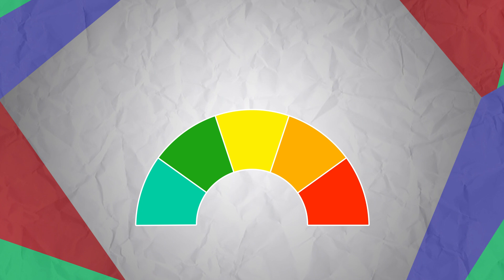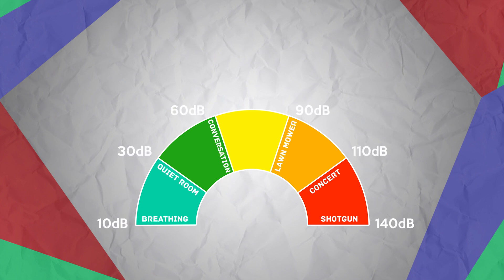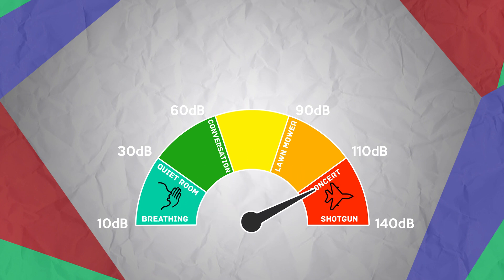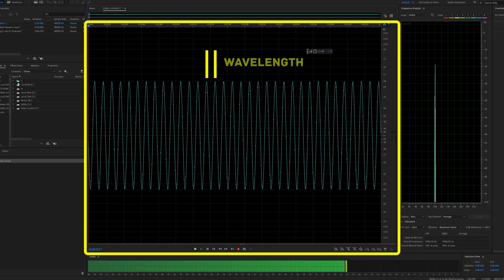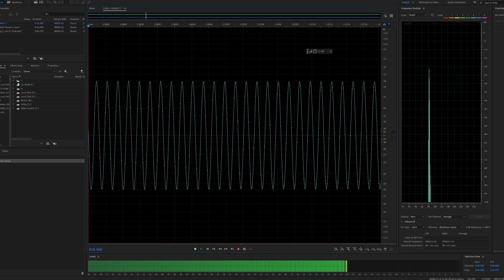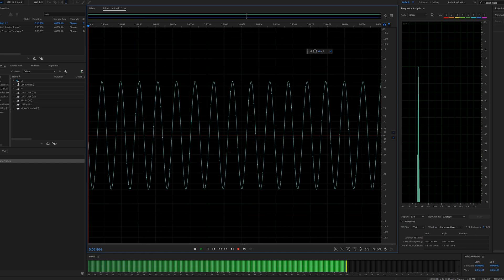Decibels are a relative measurement relating the intensity of a pressure wave to a normal or standard pressure. For the human ear, the quietest noises we hear are around 10 dB, whereas 130 dB and above is quite painful. A whisper is between 20 and 30 dB, whereas a jet engine is between 130 and 140 dB. The pitch of a sound is measured in hertz — a measure of cycles per second — describing how many times per second the particles in the air vibrate.